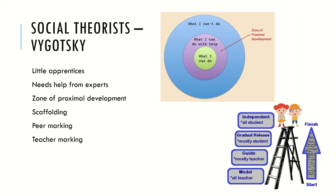Vygotsky called children 'little apprentices,' and the idea was that children learned through being paired with an expert. That expert could be anybody — it could be a peer, a teacher, a parent. Children just need a little bit of expert help; they observe and watch somebody who's a little bit better than them, and that helps them improve.